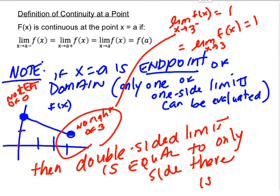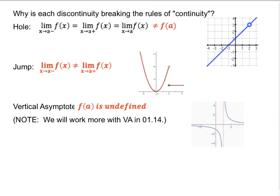If we think back to a couple videos back when we were first evaluating limits from graphs, I asked you to look at those points where nothing interesting was happening — no jump, no hole, nothing weird. At those points, you noticed that all four of these values were the same. That's because those values were continuous. At these nice, happy, well-adjusted, continuous points, all four values are the same. So let's walk through the three kinds of discontinuities and talk about why each one is an issue for this definition.